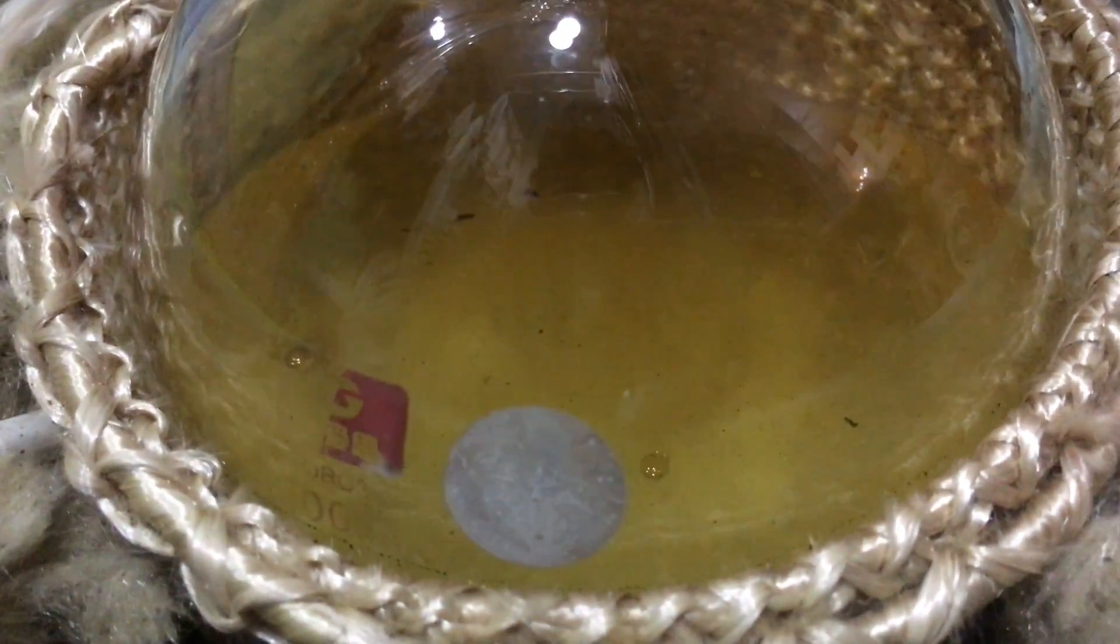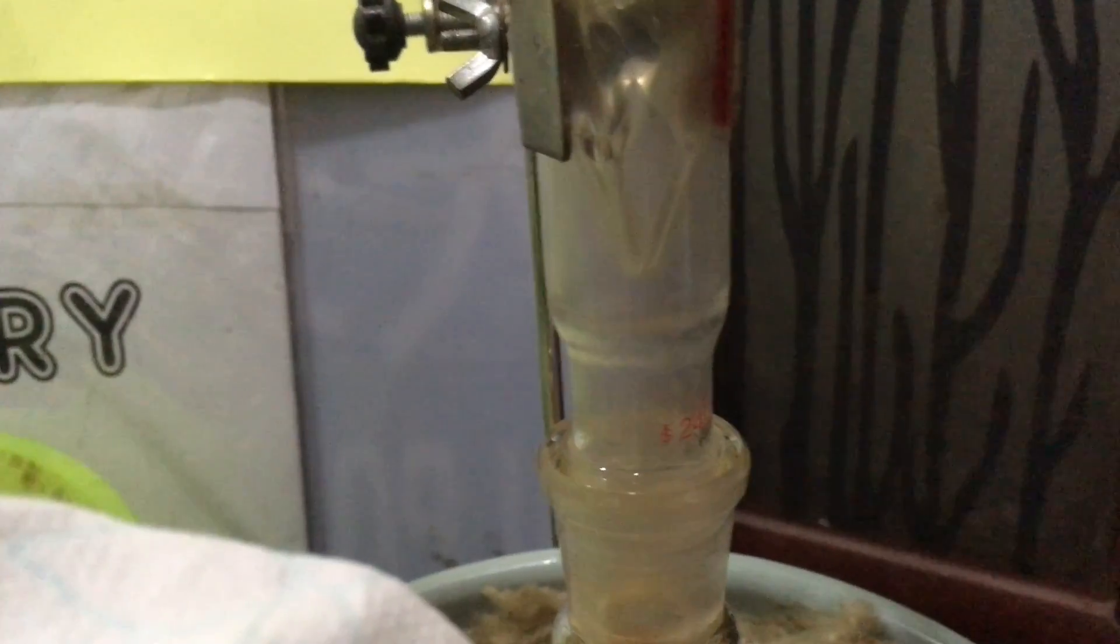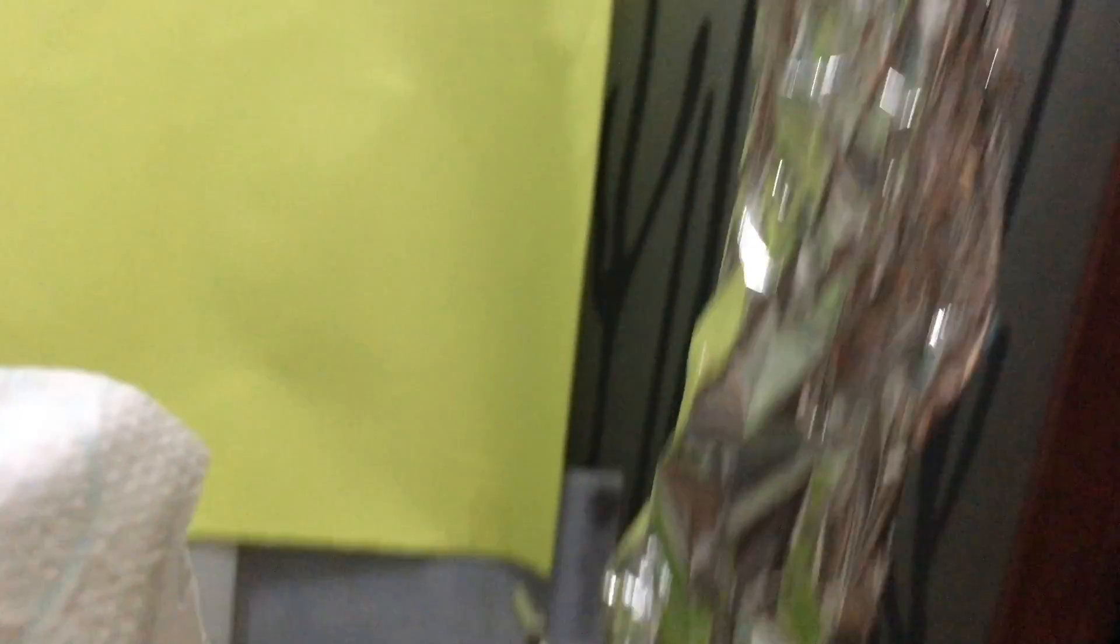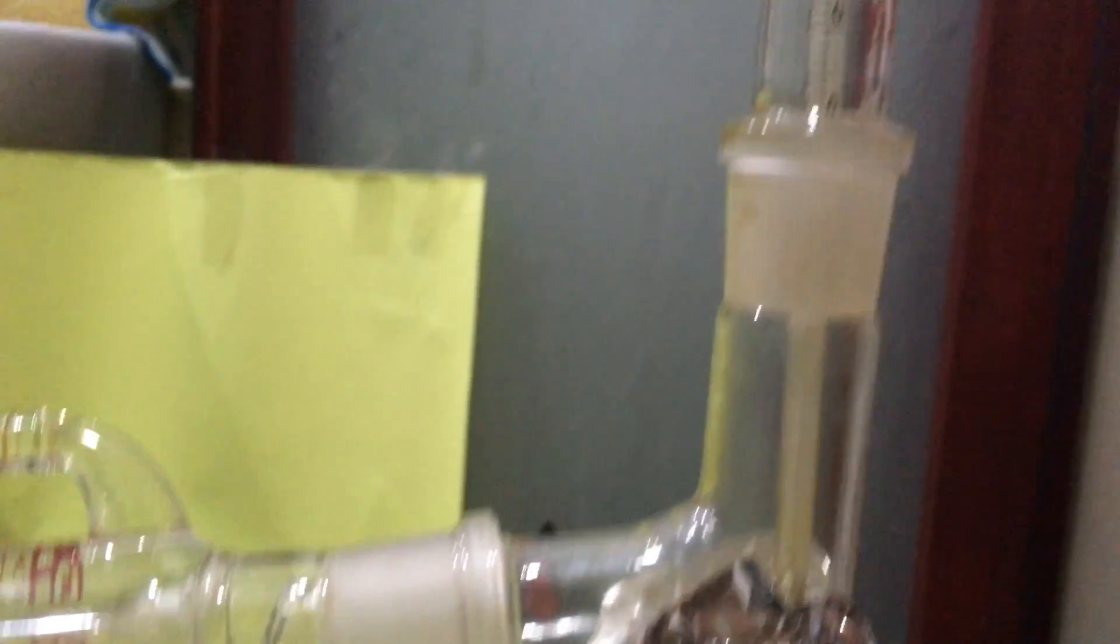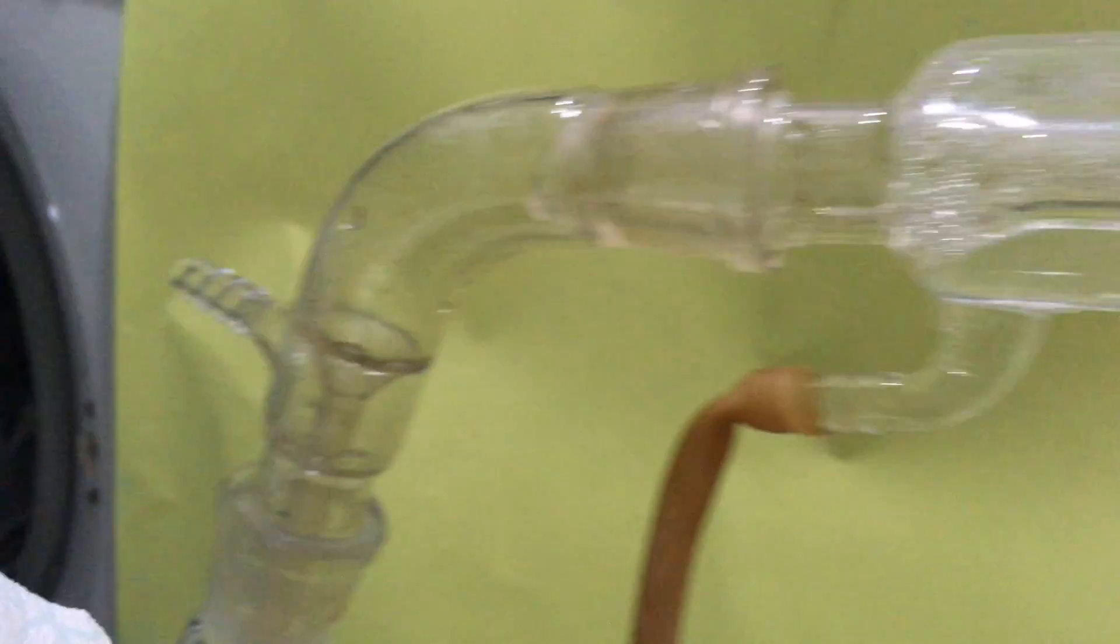Sorry for the shaking hand. By the way, a fractional distillation system is set. I used some aluminum foil to insulate the fractionating column so as to save some energy. Let's have a tour on it. Condenser, and the receiving flask.